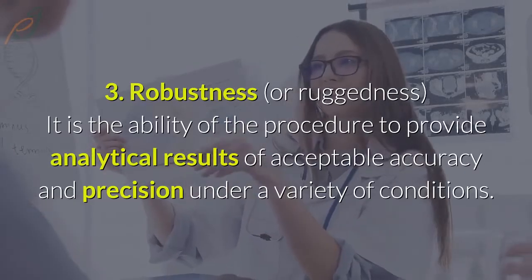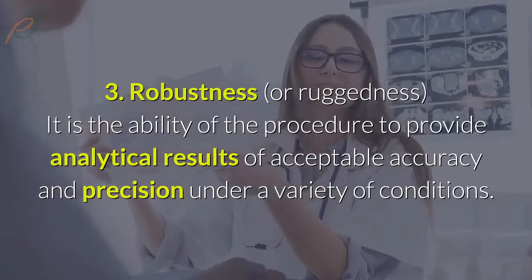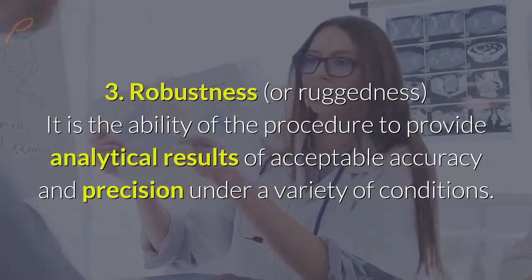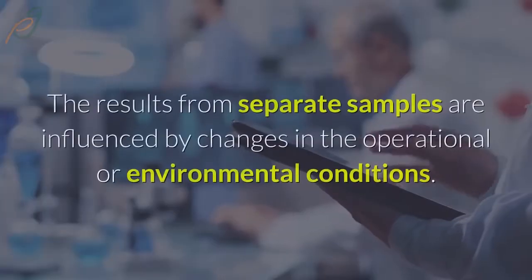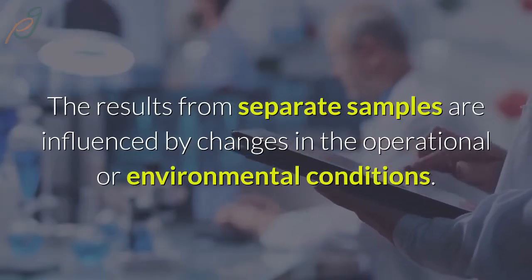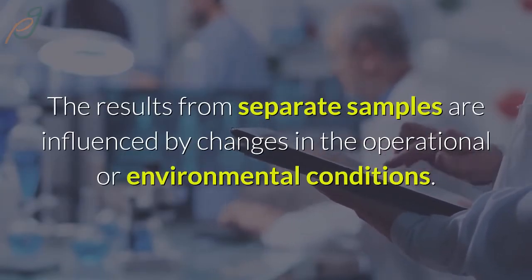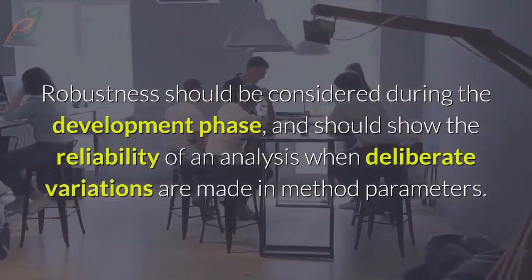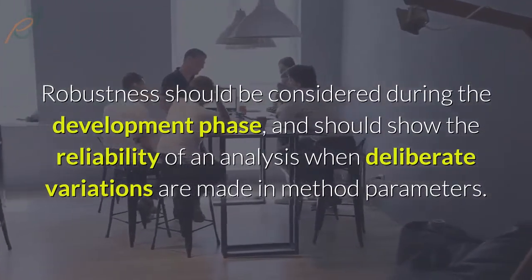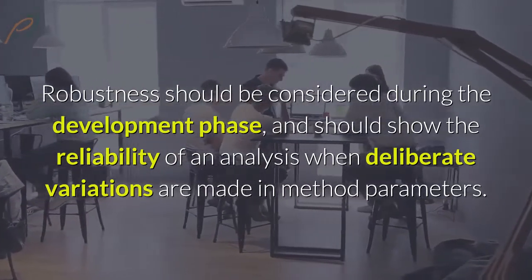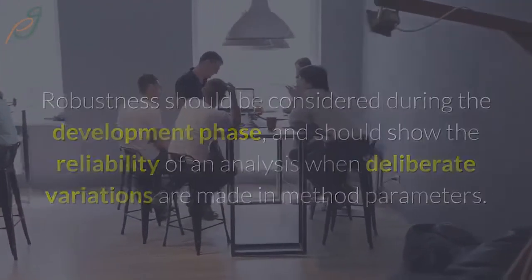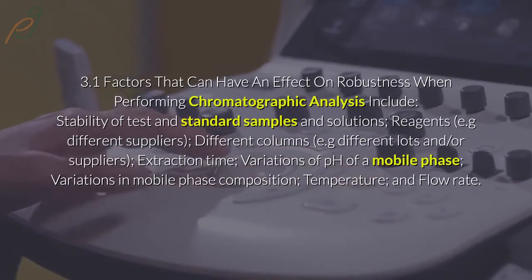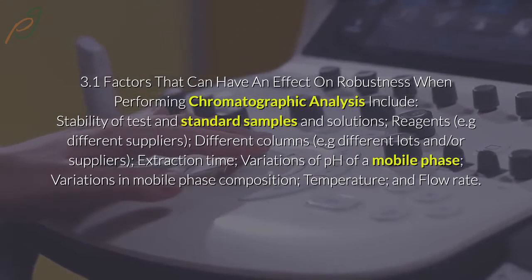3. Robustness (or ruggedness): It is the ability of the procedure to provide analytical results of acceptable accuracy and precision under a variety of conditions. The results from separate samples are not influenced by changes in the operational or environmental conditions. Robustness should be considered during the development phase and should show the reliability of an analysis when deliberate variations are made in method parameters.